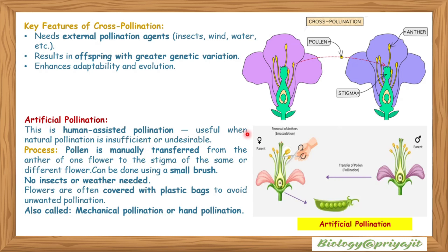Artificial pollination is human-assisted pollination, useful when natural pollination is insufficient or undesirable. Pollen is manually transferred from the anther of one flower to the stigma of the same or a different flower. It can be done using a small brush. No insects or weather conditions are needed, and flowers are often covered with plastic bags to avoid unwanted pollination.